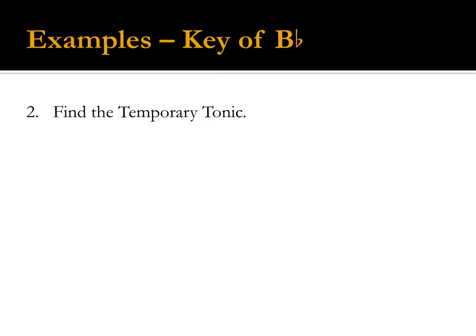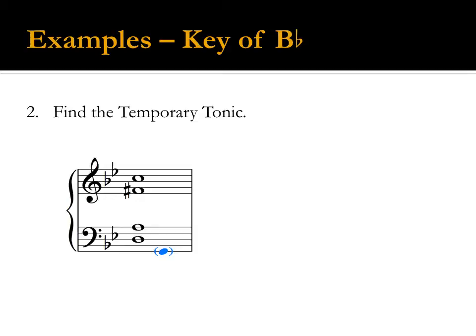The second step is to find the temporary tonic. Since we discovered this is a V7, go down a perfect fifth from the root of the dominant to find the temporary tonic. Down a fifth from D is G, so G is the temporary tonic.